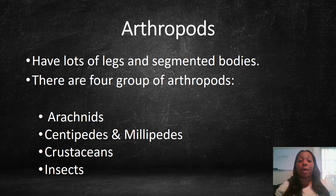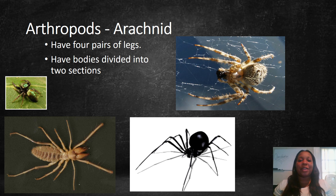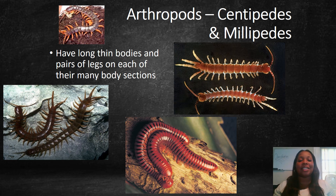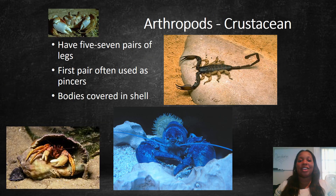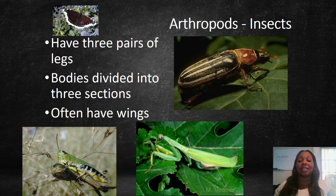Our next group of invertebrates are arthropods, which have lots of legs and segmented bodies, and there are four groups. Arachnids — like spiders — have four pairs of legs and bodies divided into two sections. Centipedes and millipedes have long, thin bodies with pairs of legs on each of their many body sections. Crustaceans have five to seven pairs of legs, their first pair often used as pinchers, and their bodies are covered in a shell — examples include lobsters, crabs, and scorpions. Insects have three pairs of legs, bodies divided into three sections, and often have wings — examples include the butterfly, grasshopper, and mantis.